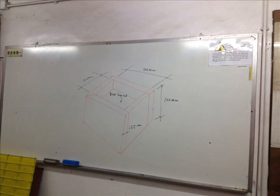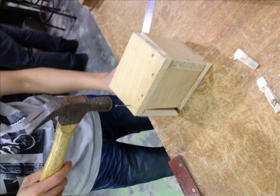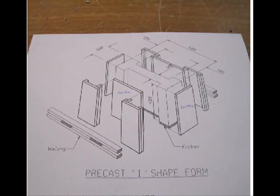On the next day, we have formwork sections. In the formwork section, the tutor told us to do a task, which is to draw on the whiteboard, and this is our finished product. Then we need to do another task, which is to draw in the graph. It is the eye shade formwork.